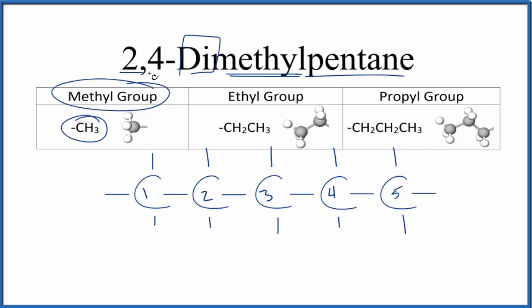One will be on the second carbon. The other will be on the fourth. So let's add the methyl groups to our 2,4-dimethylpentane.